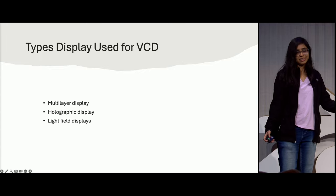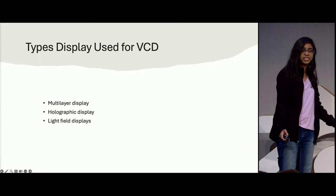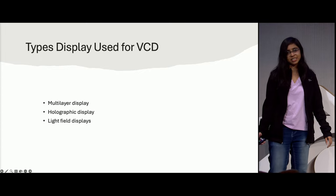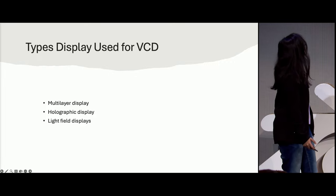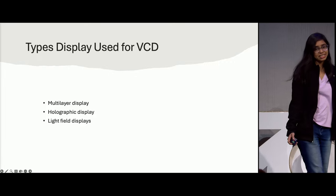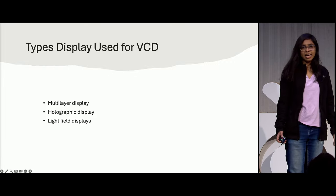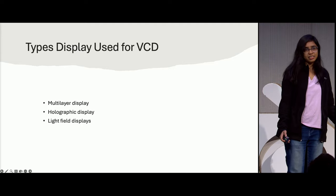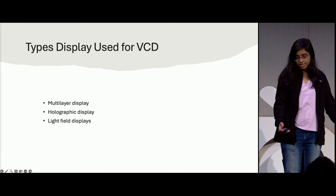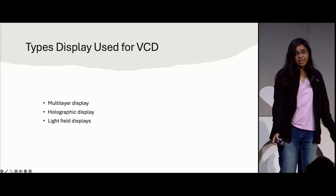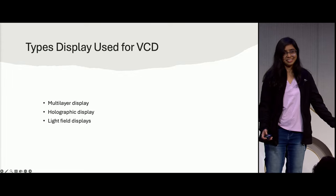What are the different types of displays which can be used as a vision correction display? There are multi-layer displays, holographic displays, and light field displays. In this project, we use a light field display as the vision correction display.